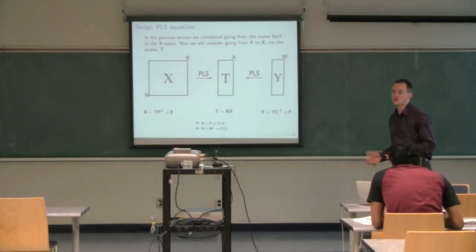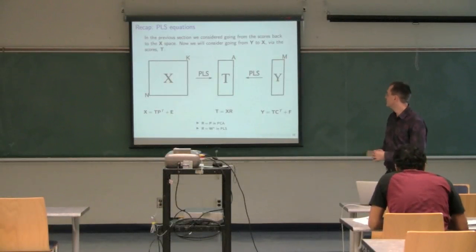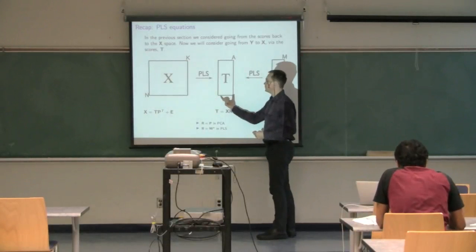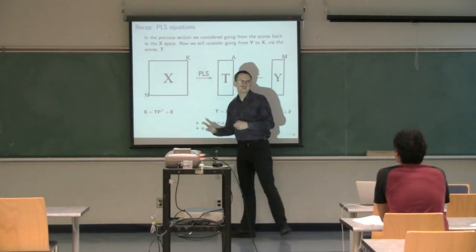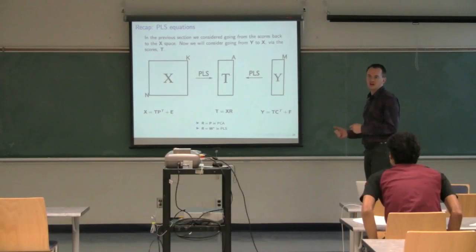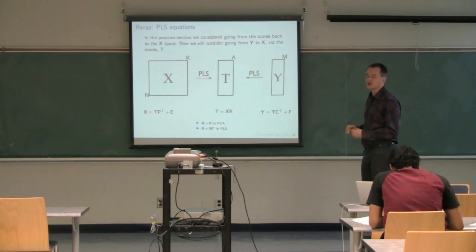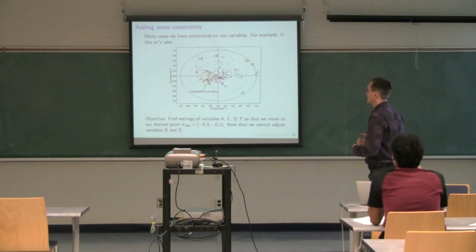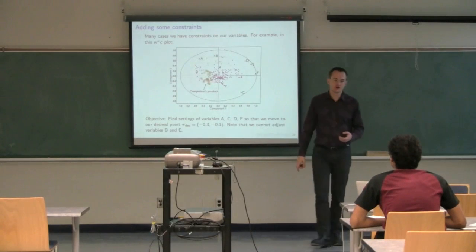We're looking at going purely from the score space back to the original exit variables — going from T scores, assuming we were given a set of Ts that we wanted to achieve, to go back to the exits. But that's not an entirely realistic problem for product development. Previously, we were characterizing observations, such as competitors' quantity versus ourselves, already in the score space and going back to the original exit variables.